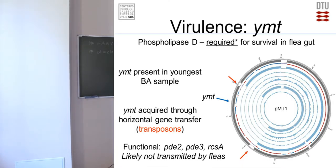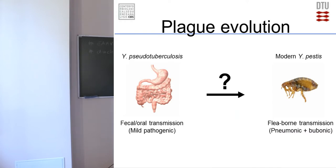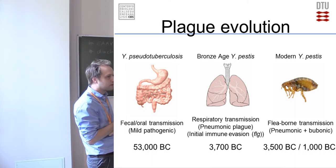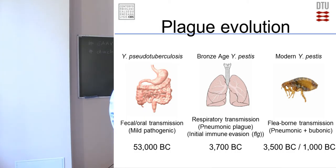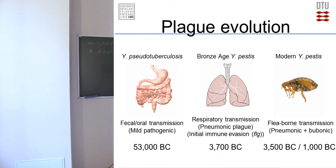In summary, we don't believe it was transmitted by fleas, because we also looked at additional genes and found they were still functional — not yet inactivated — and together with the YMT gene, we believe it was probably not transmitted by fleas. Putting this into a timeline: we start with pseudotuberculosis around 55,000 years ago, a mild pathogen going mainly through the gut. Then these Bronze Age ancestral samples — around 3,700 BC — we believe cause a respiratory disease, pneumonic plague, and we also see an initial attempt at immune evasion.